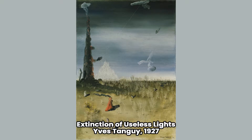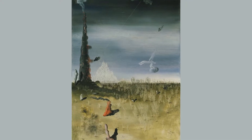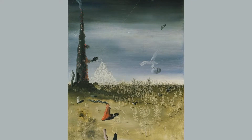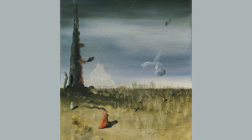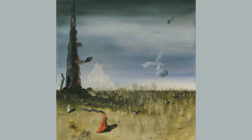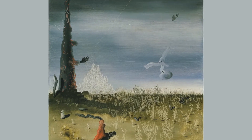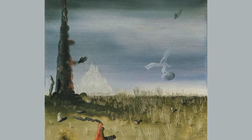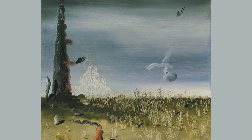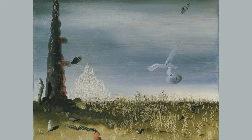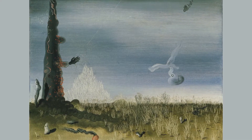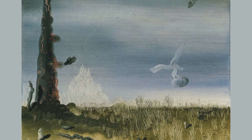Extinction of Useless Lights — artwork by Yves Tanguy from the year 1927. Extinction of Useless Lights plunges us back into a surreal and dreamlike world. The main characters are dressed in undulating amoebas, and the steppe landscape is made up of stunted and languid plants, and a smoking chimney on the horizon line from which a hand comes out.